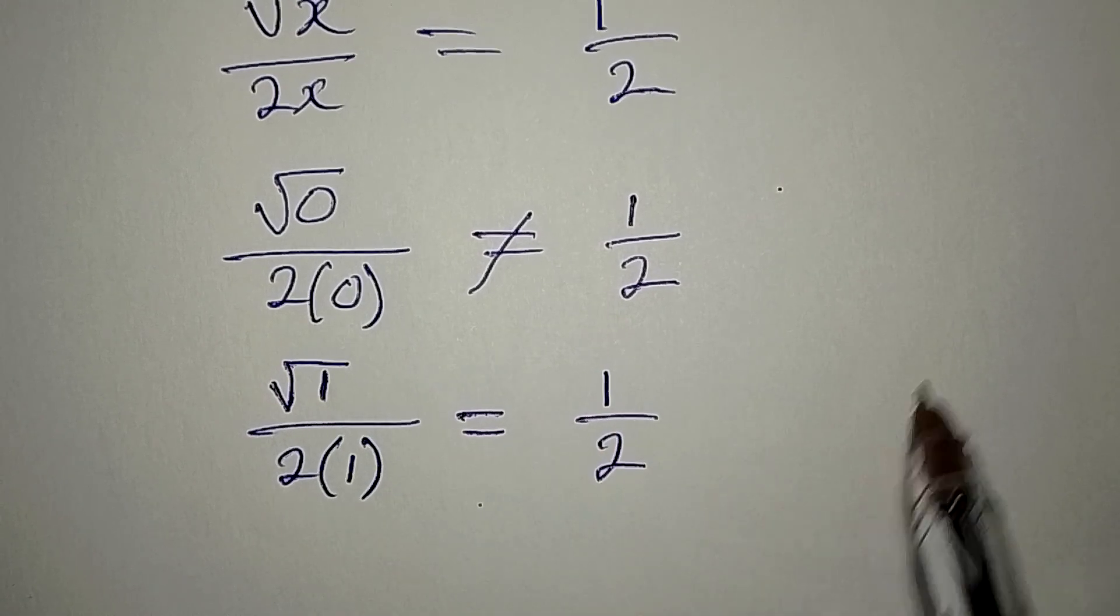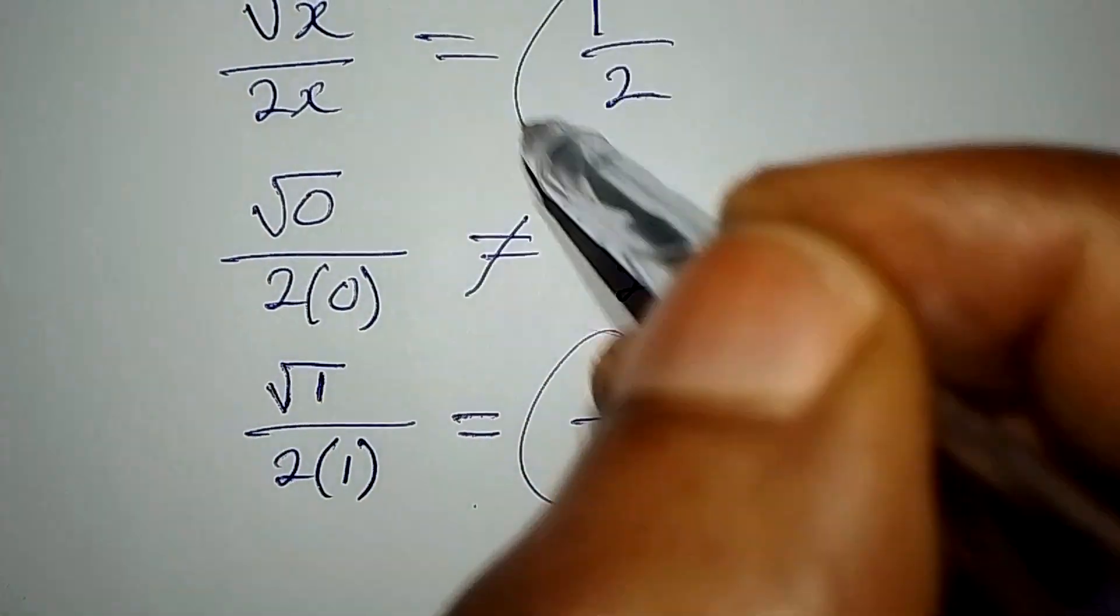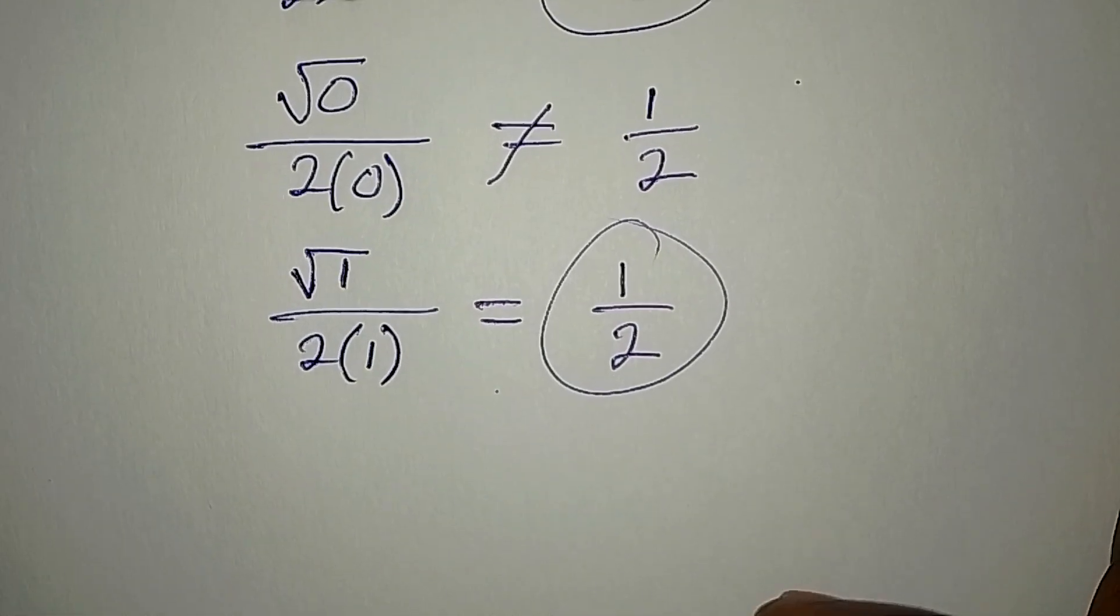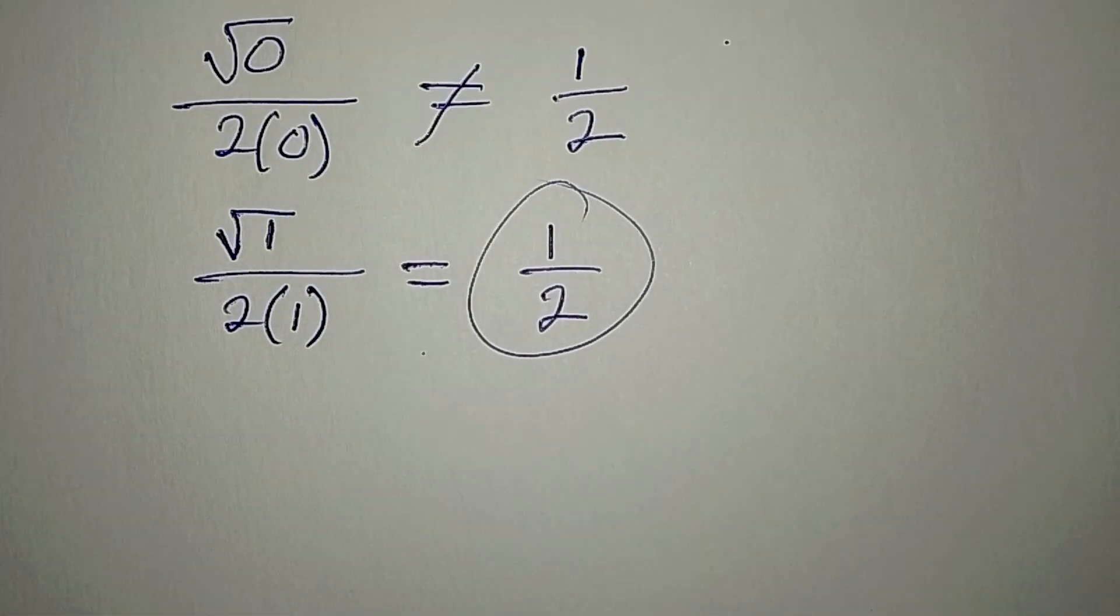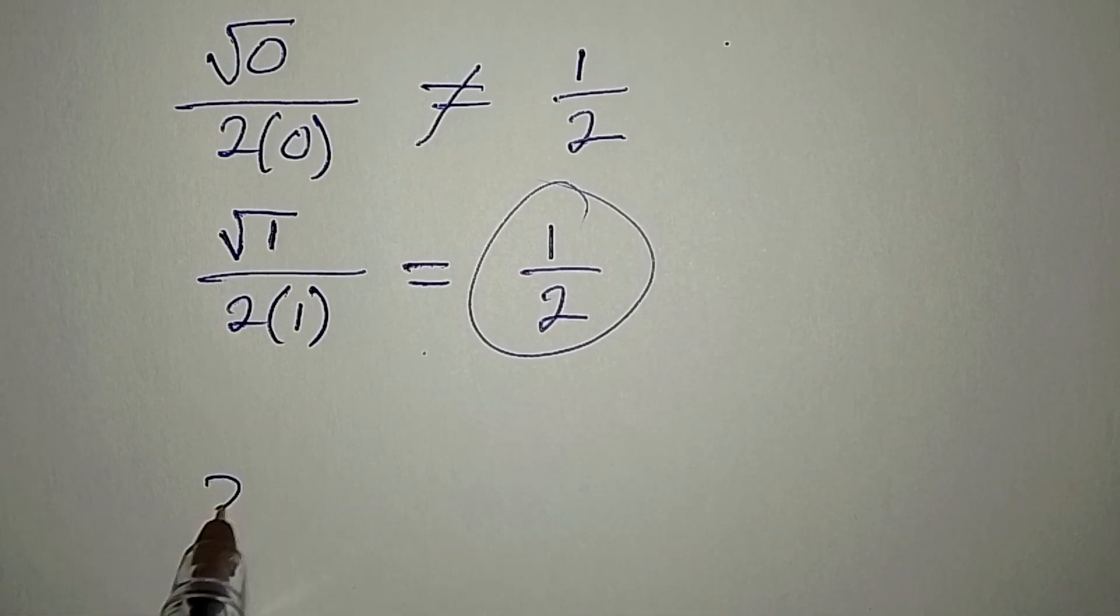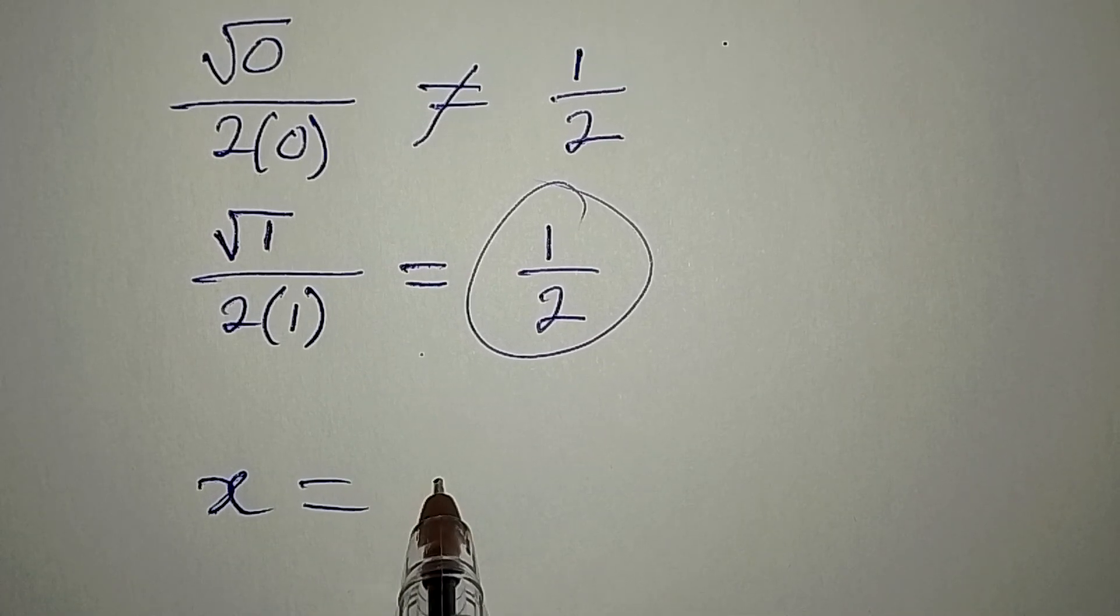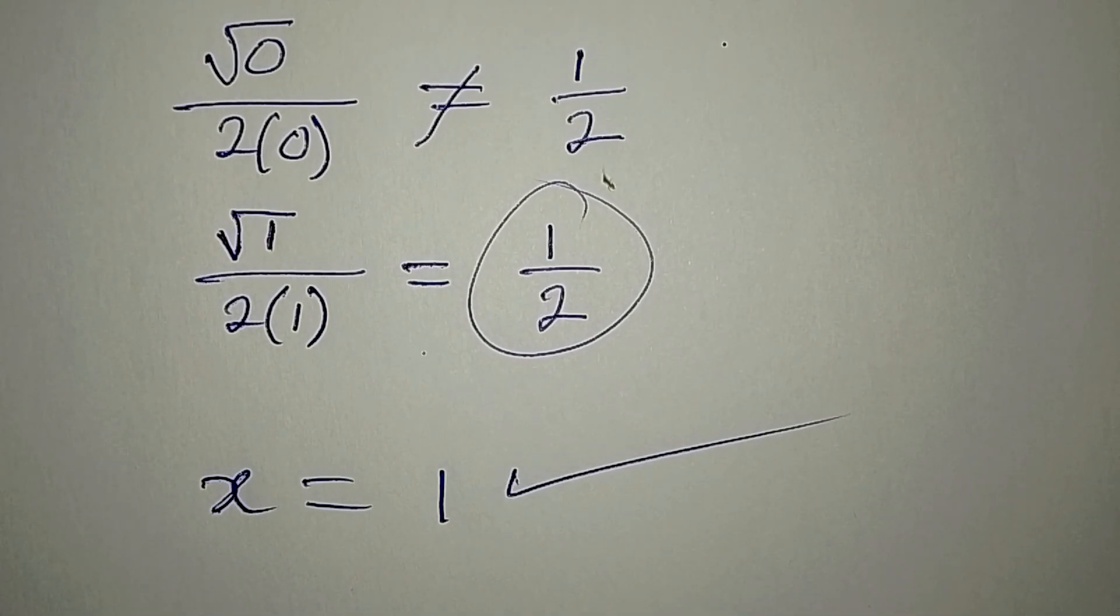And remember that this is what we had on the right hand side of the equation, so the only value of x that is satisfying is x equal to 1. Thank you for watching.